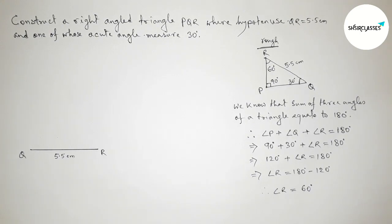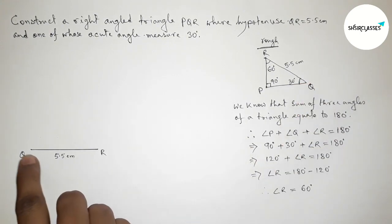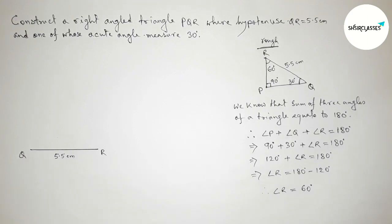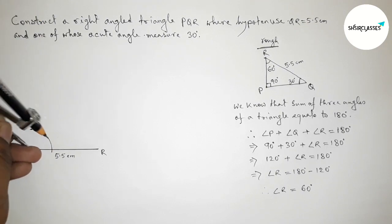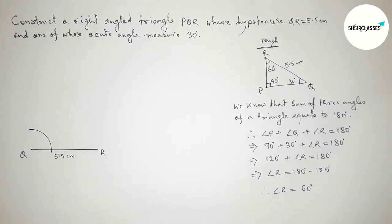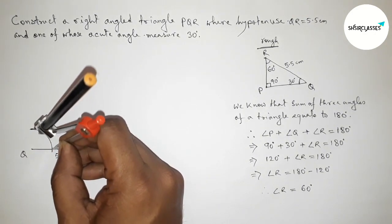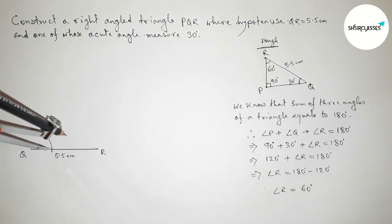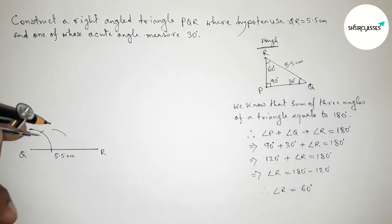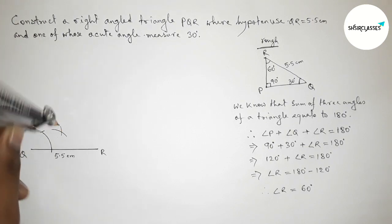Next, we have to draw a 30 degree angle at point Q with the help of a compass. Putting the compass on point Q, taking any length and drawing an arc. Now putting the compass on that arc, taking the same length and cutting another arc, then drawing another arc with the same length and cutting again. Joining this line to get a 30 degree angle at Q.